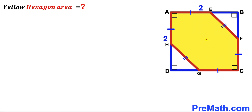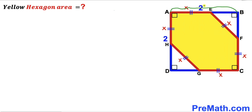Let's focus on this six-sided yellow hexagon. We know all its side lengths are equal. Let's assume segment AE has side length X. Then all remaining sides are also X. The side length of the square is 2 units and segment AE is X, so the remaining segment EB is going to be 2 minus X. We know segment EB equals segment BF, so BF is also 2 minus X.